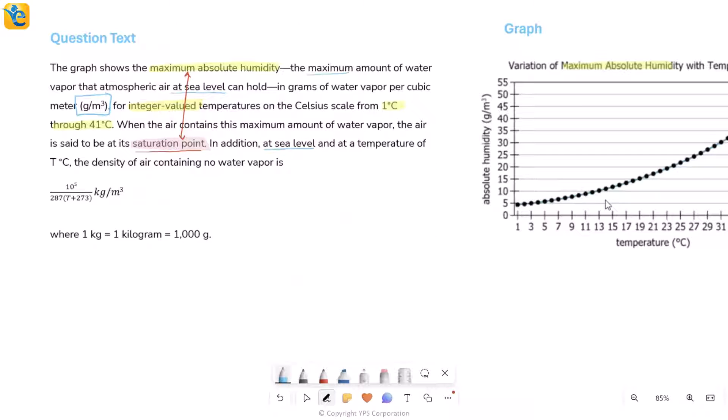Then you read further and find this information that in addition at sea level, at a temperature of T degrees Celsius, when you're at this specific temperature, the density of air containing no water vapor - air containing no water vapor, let me just shorten this, I'll just call this dry air. So, density of dry air is given by this formula. How do you interpret this?